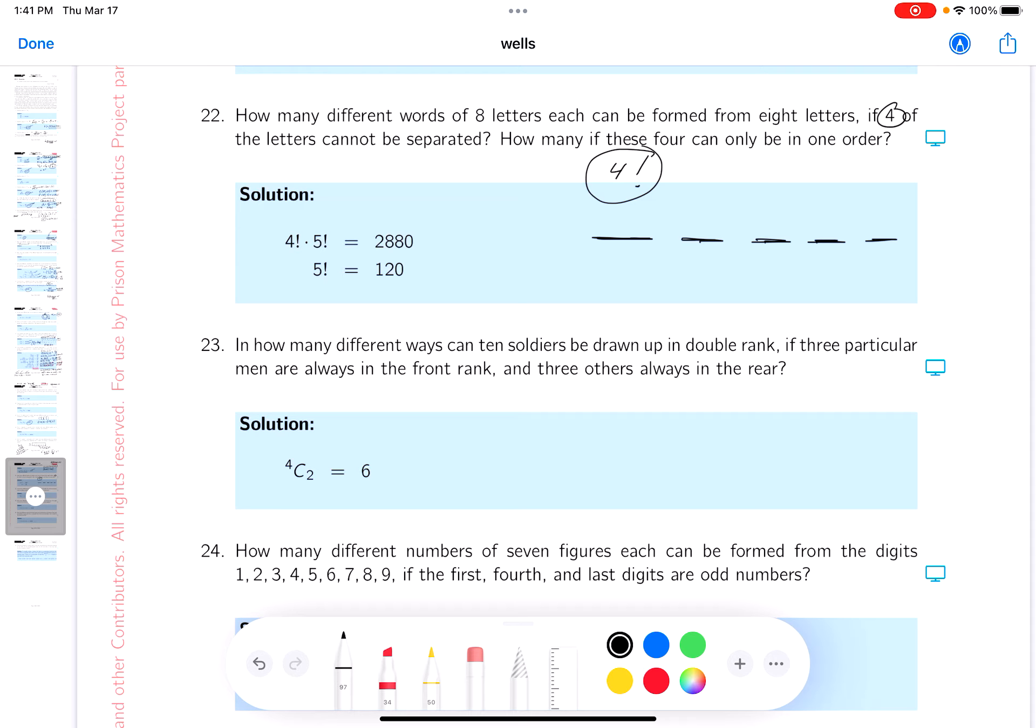So it's going to be four factorial, but this can be put here, here, here, here, or here. So you can treat this like if it was one letter, but it's four factorial different arrangements to it. So we're going to get five factorial times four factorial.